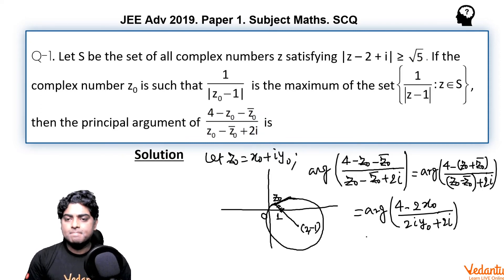This is somewhat like argument of, 2 will be cancelled out, so 2 minus x0 upon iota y0 plus 1, right. So we can write it as argument of minus iota, or we consider it as plus iota times x0 minus 2 divided by y0 plus 1.